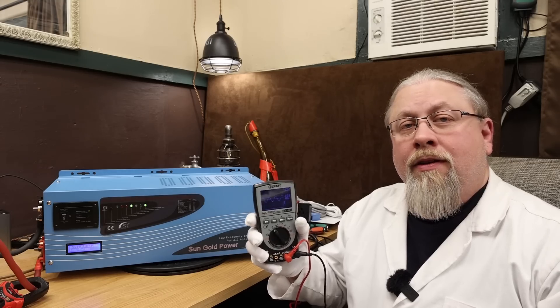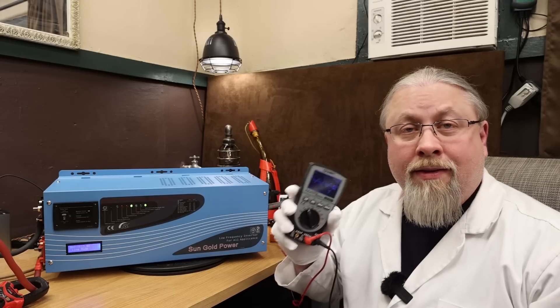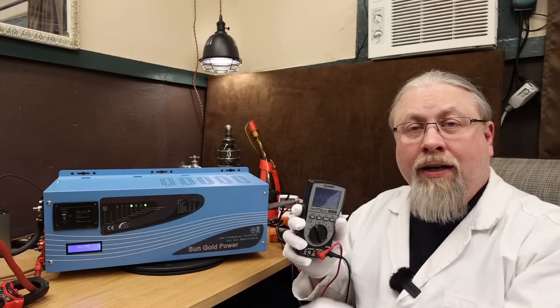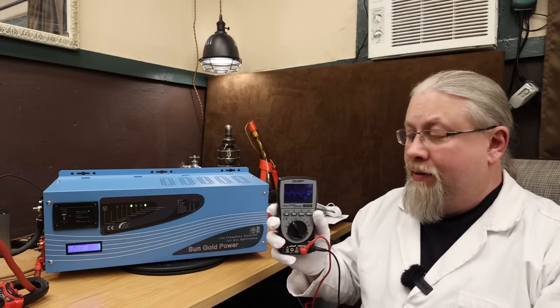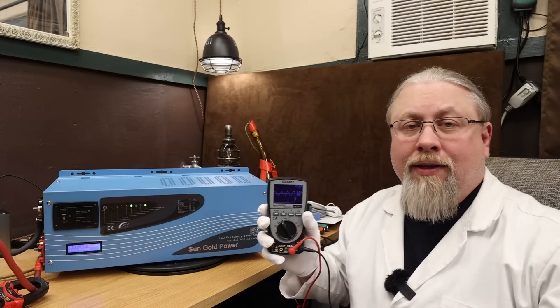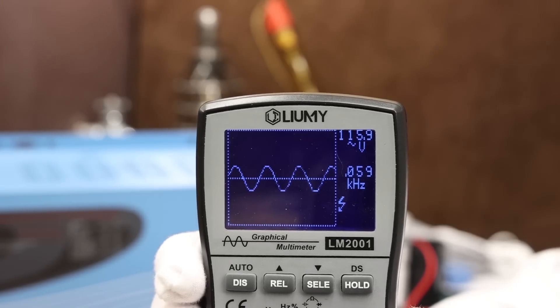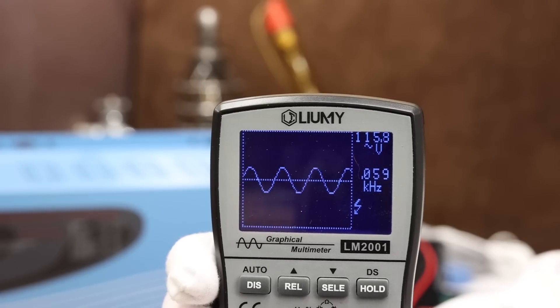So because this is an inverter, the first thing we're going to check is the sine wave. So I have a heater running on the floor at about a thousand watts. We'll zoom in and see what the sine wave looks like. As you can see there, the sine wave is pure. We got 115 volts at 60 hertz.